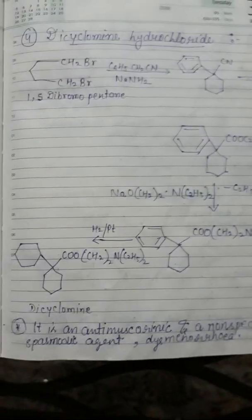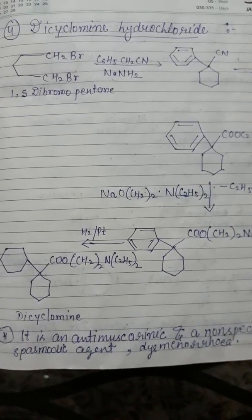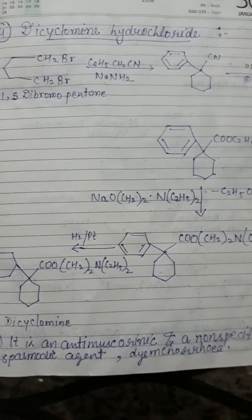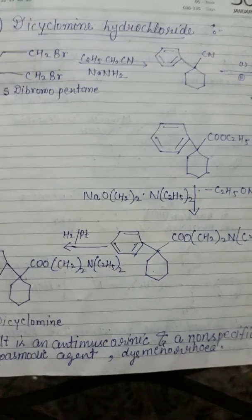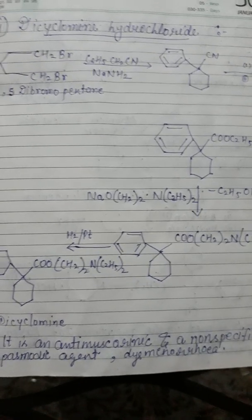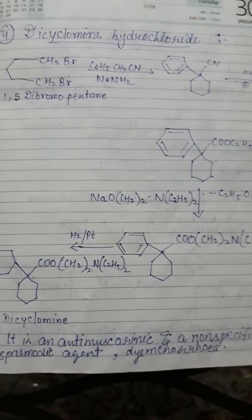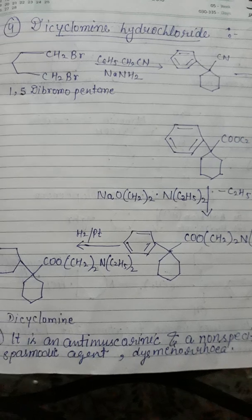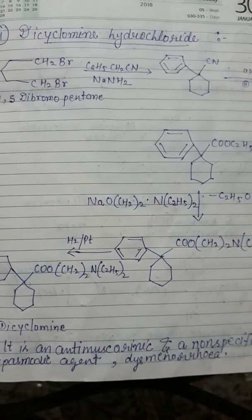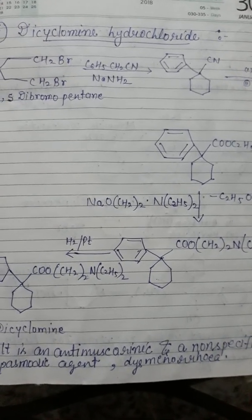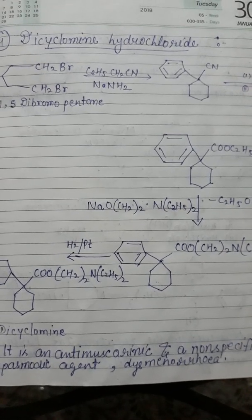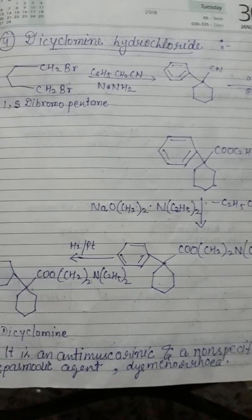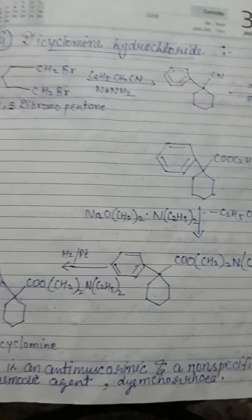These drugs in therapeutic doses predominantly block the muscarinic action of acetylcholine, but the ganglionic and skeletal neuromuscular actions of acetylcholine are not affected. Cholinergic receptor blocking drugs or antagonists are divided into two subgroups — muscarinic and nicotinic — on the basis of their specific receptor affinities. Anti-nicotinic drugs consist of ganglion blockers and neuromuscular junction blockers.